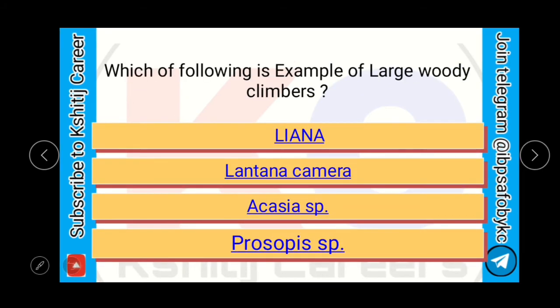Which of the following is an example of large wood climbers? Liana, Lantana camara, Acacia species, or Prosopi species. The answer is Liana — the large wood climber.